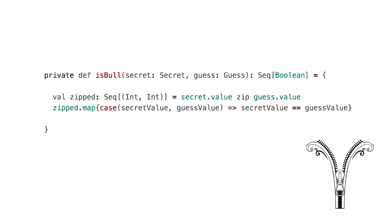People talk about map and filter a lot, but I want to talk about the zip tool, which is an FP tool. This is rather special because this is the first time I actually used an FP concept while doing the Cows and Bulls game — I needed it. I had a secret number and a guess number, and I wanted to find elements in the same position to see if they matched, and zip actually helped with that. This is an example of how you learn and consolidate FP concepts while doing a game, because it's interesting and very enjoyable.